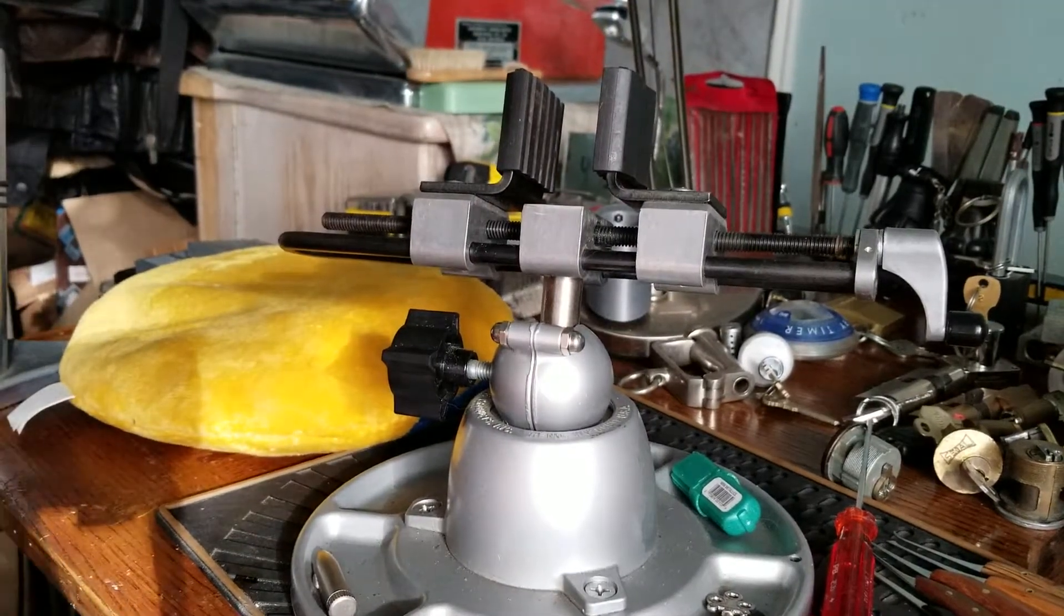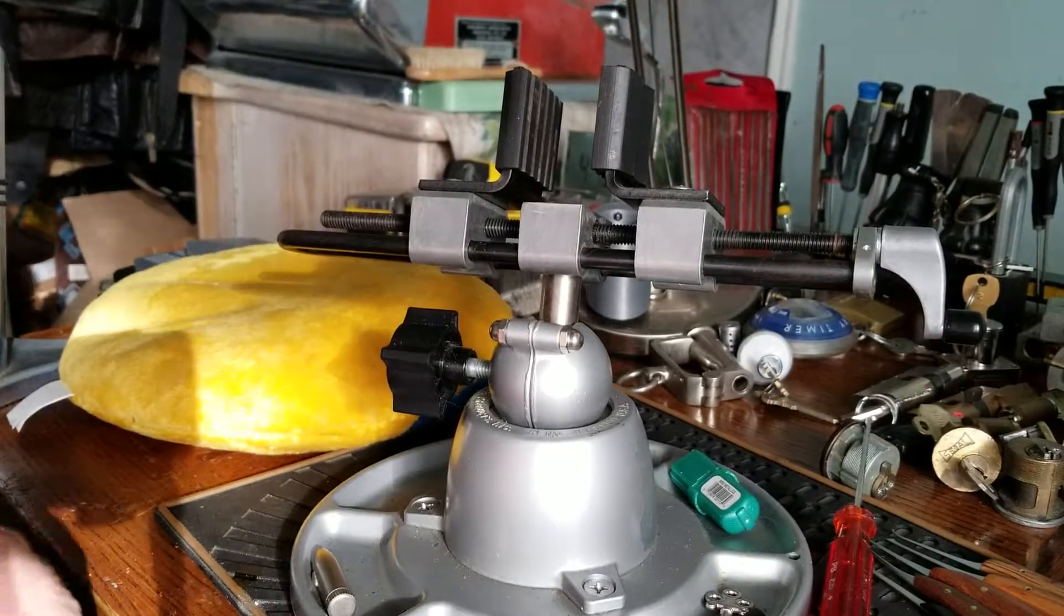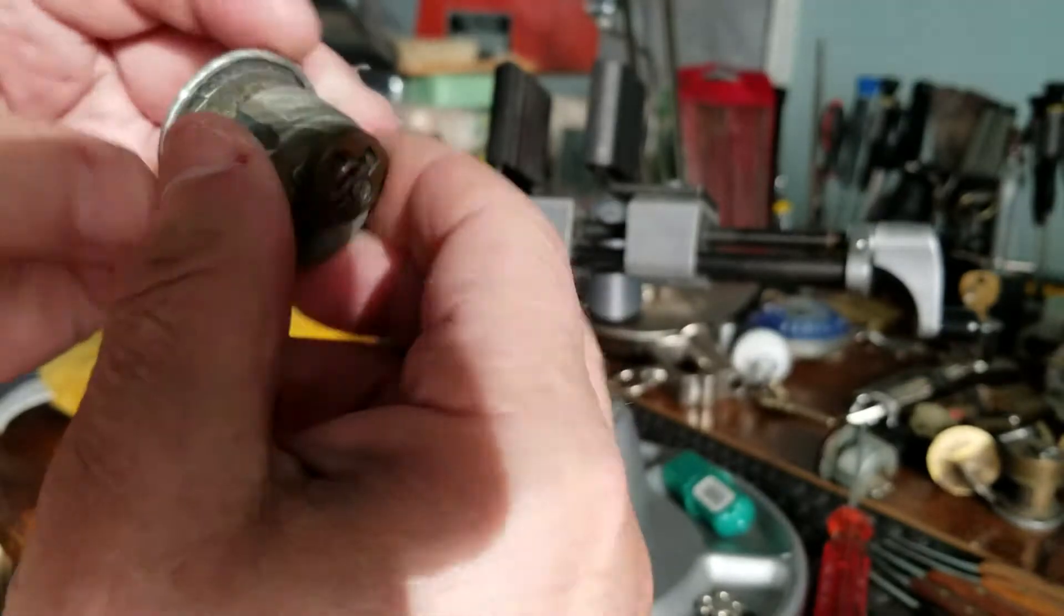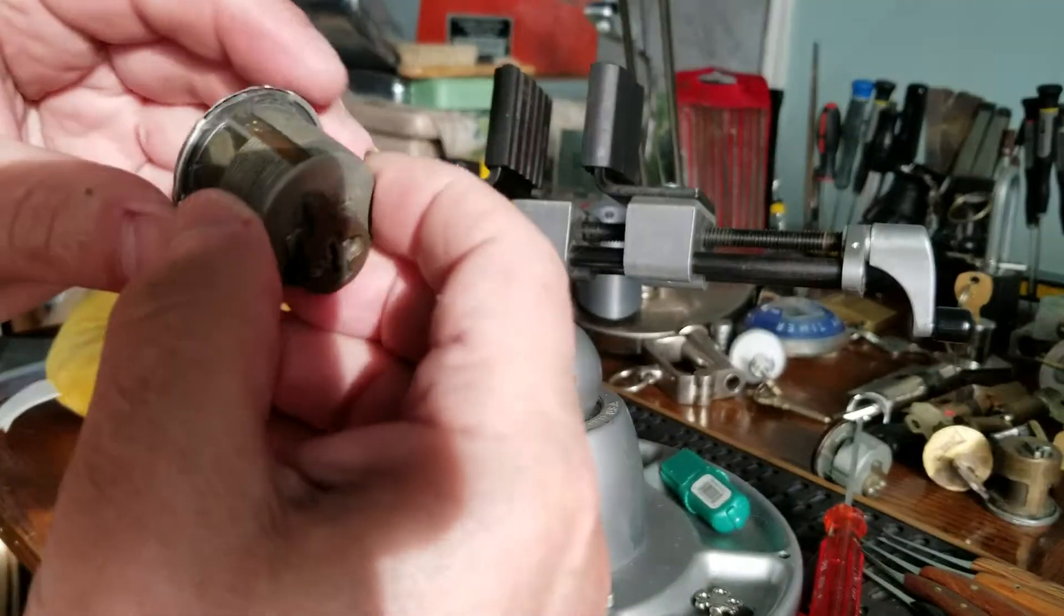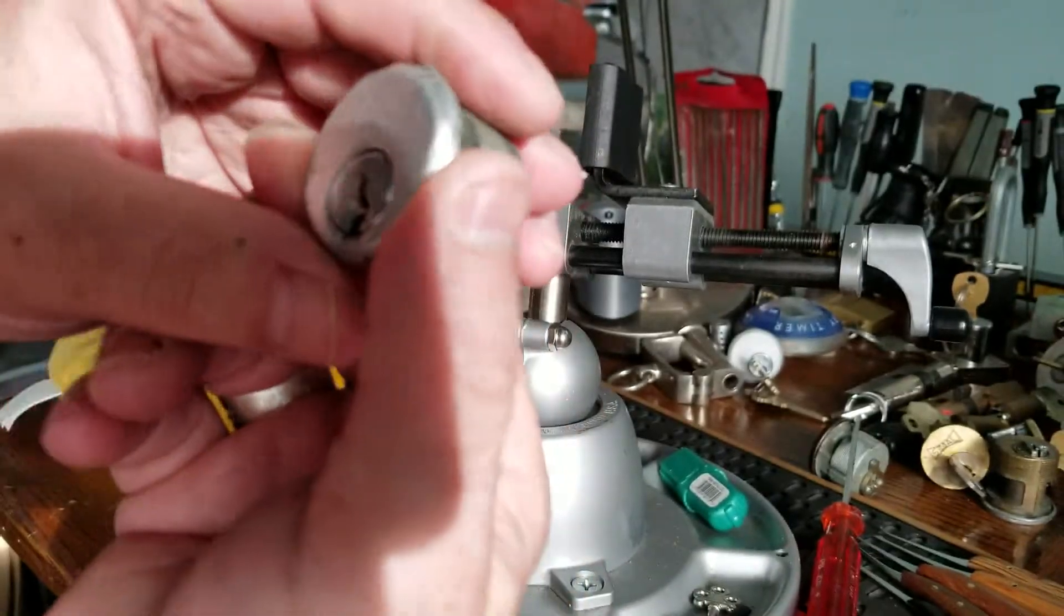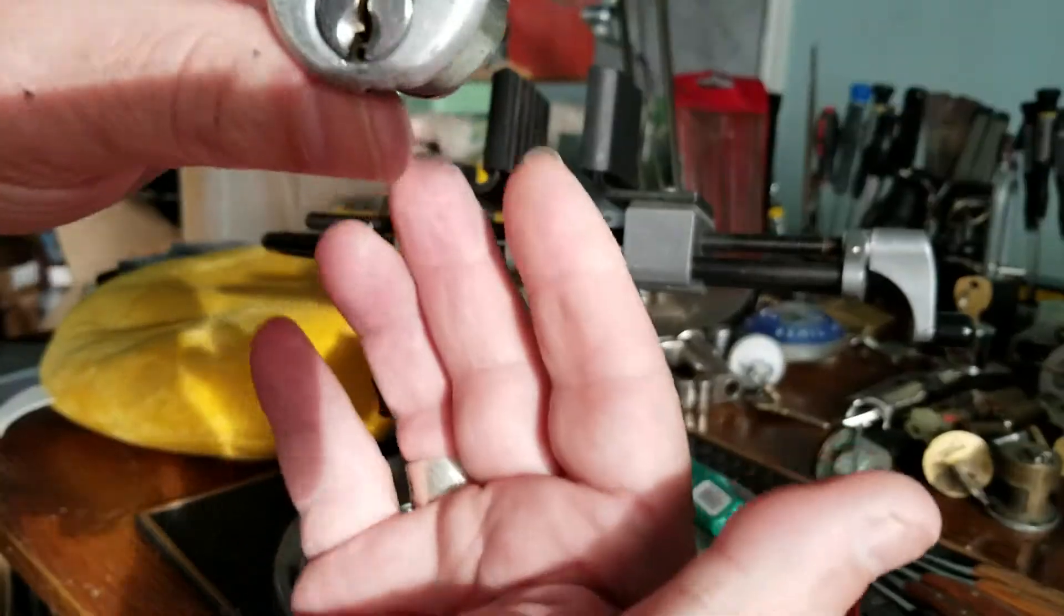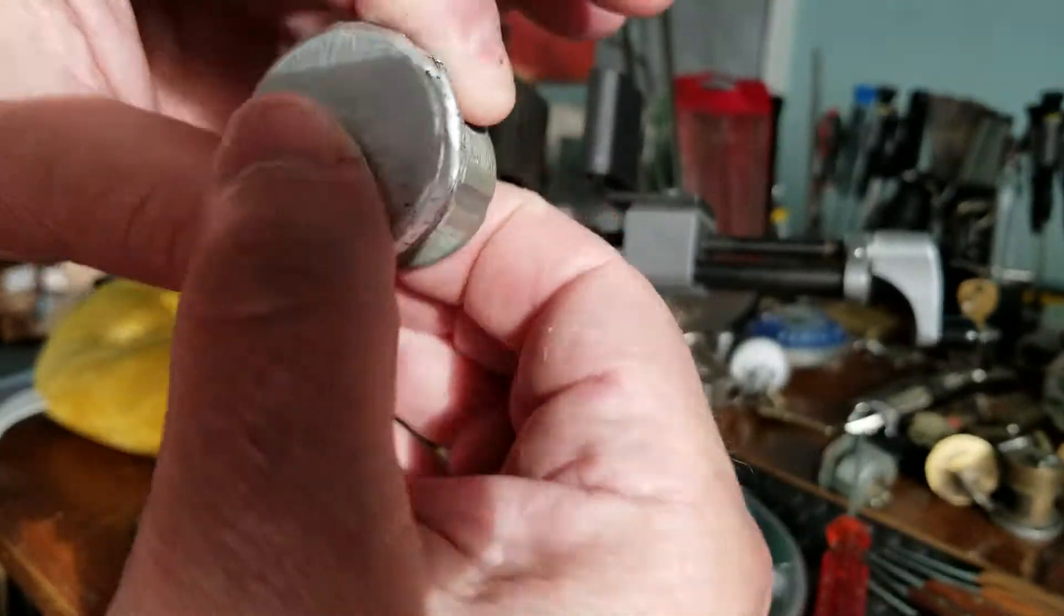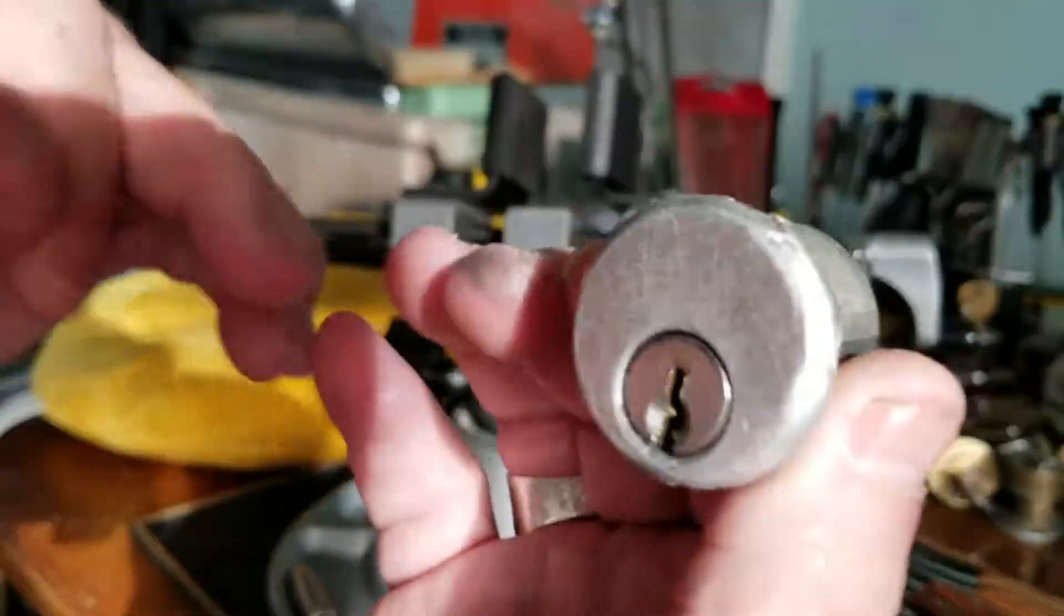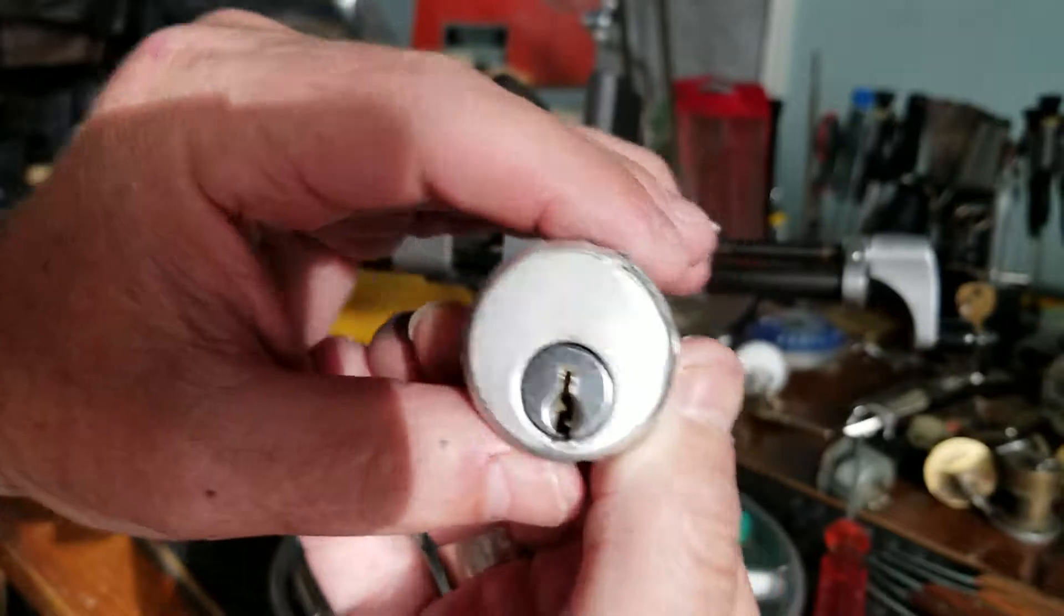Good evening, welcome back to Thumper's Lock Picking on Stock Lock Sunday. I have no idea what this is. I just pulled it out of one of my bags, bunch of locks that I haven't got to. There's no markings on this, I have no key. Let's see if we can get into this.